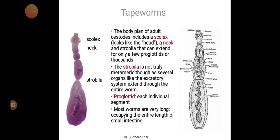The body plan of adult cestodes includes the scolex, which looks like the head, and a neck and strobila that can extend for only a few proglotids or thousands. The strobila is not truly metameric, as several organs like the excretory system extend through the entire worm. Each individual segment is called a proglotid. Most worms are very long, occupying the entire length of the small intestine.